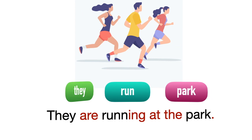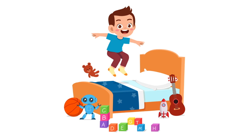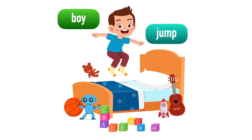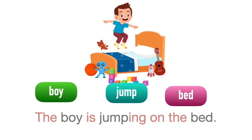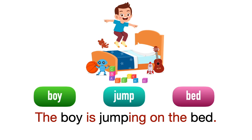Look at the picture — a boy. The action is jump, the place is bed. The boy is jumping on the bed. Jumping on the bed — atas katil.